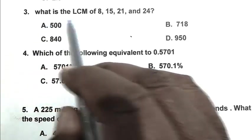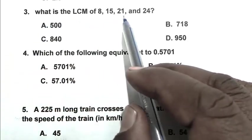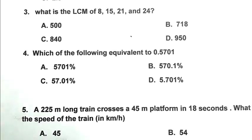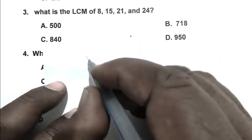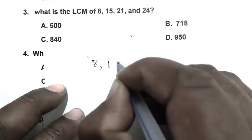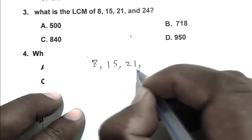Question number 3: What is the LCM of 8, 15, 21, and 24? So friend, we calculate the LCM of 8, 15, 21, and 24. First divide by 2: it becomes 4, 15, 21, 12.